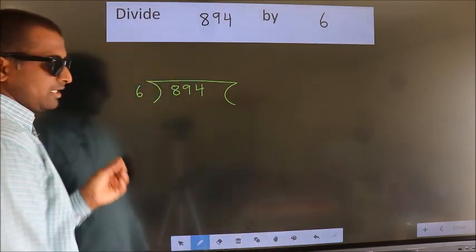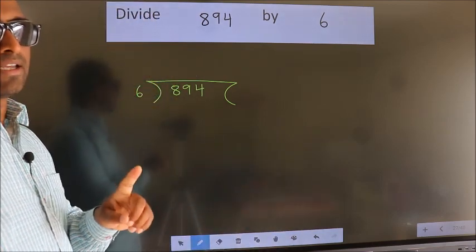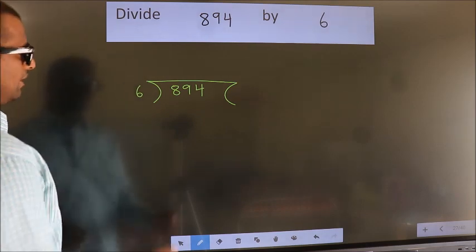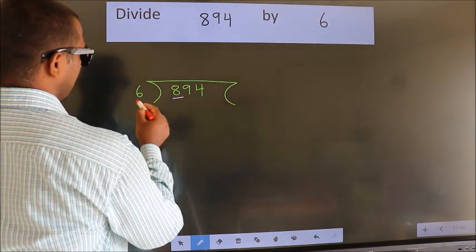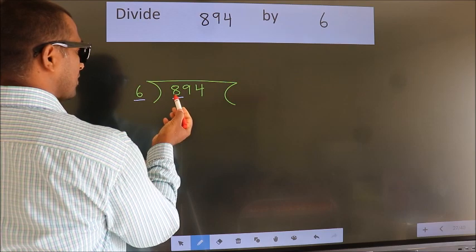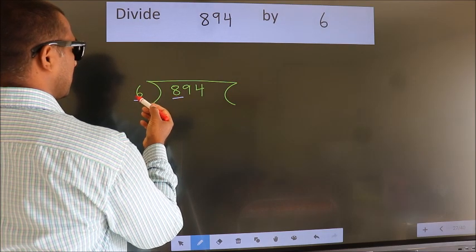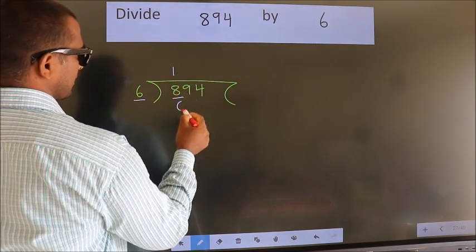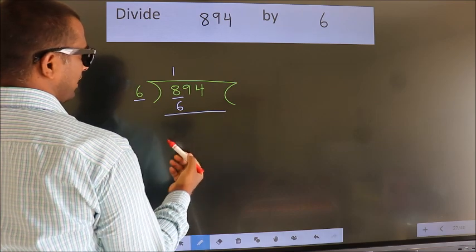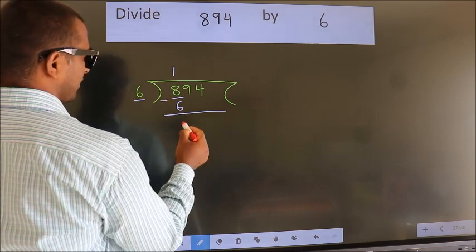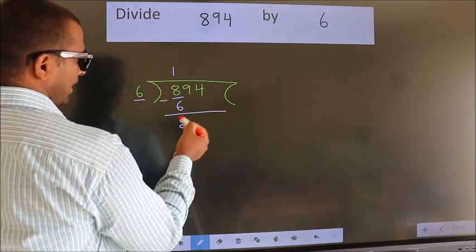This is your step 1. Next, here we have 8, here 6. A number close to 8 in 6 table is 6 times 1 is 6. Now we should subtract. We get 2.